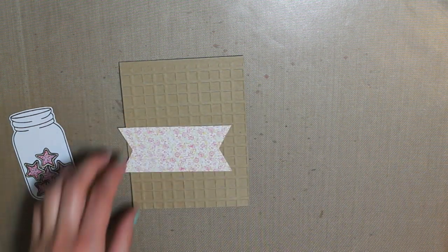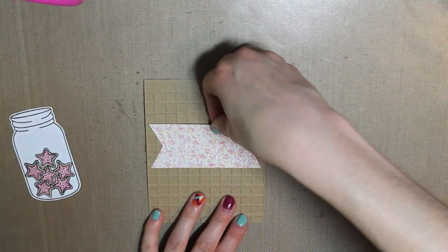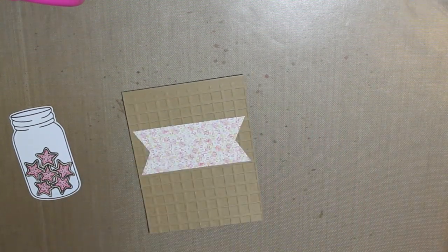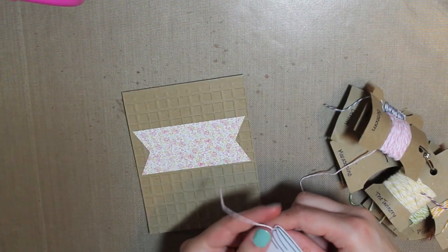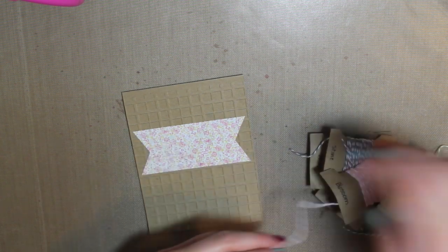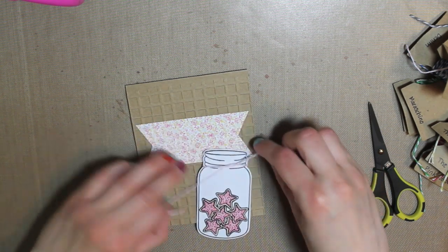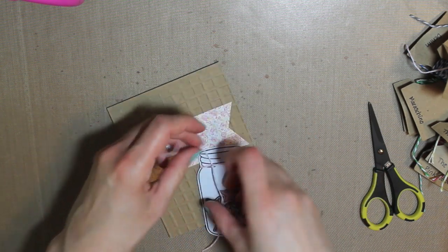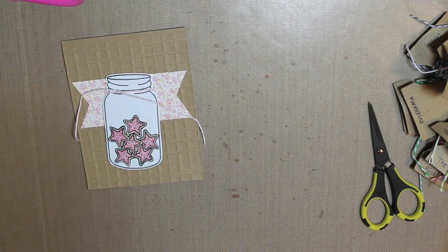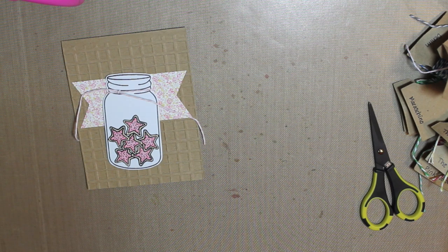And then I'll go ahead and adhere that right onto my card base. And I'm going to tie a little bit of this pink twine from the twinery. It's called Blossom. It's the light pink one. And I'm going to tie it in a knot right there. And then I'm going to wait because I'm going to make a little tag to put on the top. And that's where my sentiment is going to go.